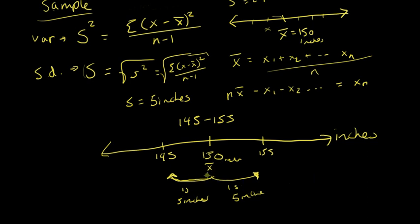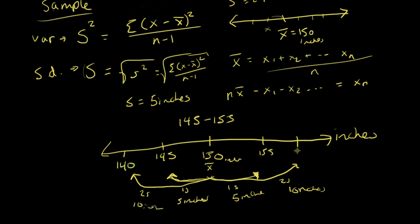Let me also quickly address within two standard deviations. One standard deviation is 5 inches, so two standard deviations is 10 inches. Going 10 inches above 150 gives 160, and 10 inches below gives 140 — so within two standard deviations is 140 to 160. Standard deviation is very useful for describing the spread of data. Later we'll discuss how within two standard deviations implies roughly 95% of the data falls in that range.